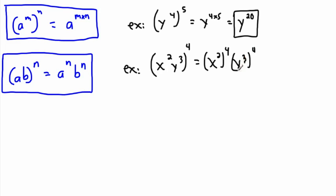This example is a combo — now I also have to apply the power-to-a-power rule. X squared to the power of four equals x to the power of two times four, which is x to the eighth. And y to the power of three to the power of four equals y to the power of three times four, which is y to the twelfth. Both rules applied together.